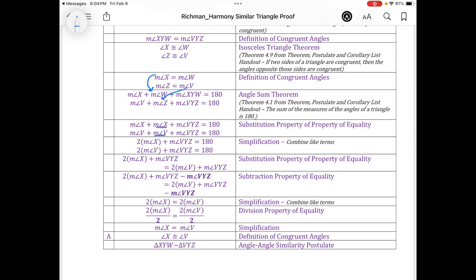So that was my next step—simplifying. I could combine that we have two times the measure of angle X plus the measure of angle XYW had to be 180. And then now I have two times the measure of angle V plus the measure of angle VYZ has to be 180.